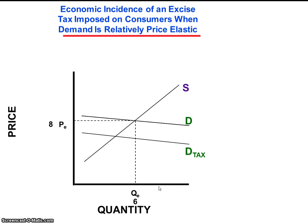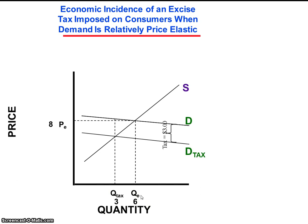The imposition of the tax on the demand side of the market is represented by an inward shift of the demand curve by $3 at all points along the curve. The new demand curve in the taxed market intersects the supply curve here, indicating a decreased level of output. The sensitivity of consumers to the tax-induced price increase means that they sharply reduce their consumption from $6 in the market without the tax to $3 in the market with the tax.